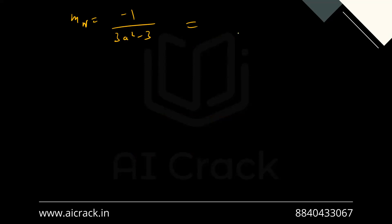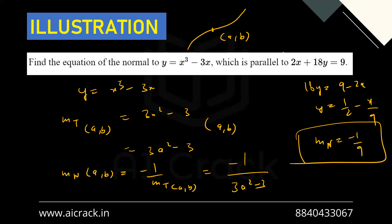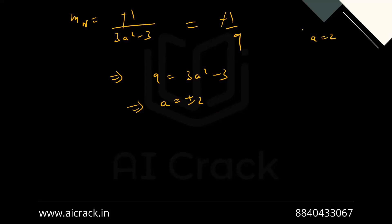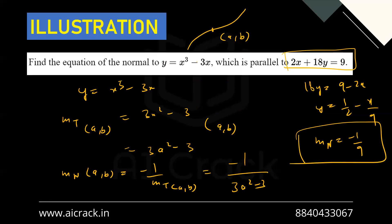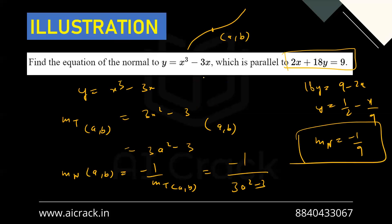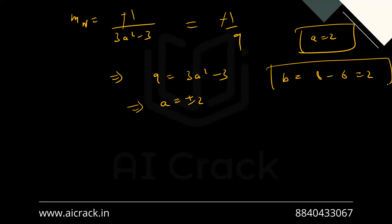We have m_n = -1/(3a² - 3) and also m_n = -1/9. Equating: 9 = 3a² - 3, giving a = ±2. Taking a = 2: b = (2)³ - 3(2) = 8 - 6 = 2. So one point is (2, 2).